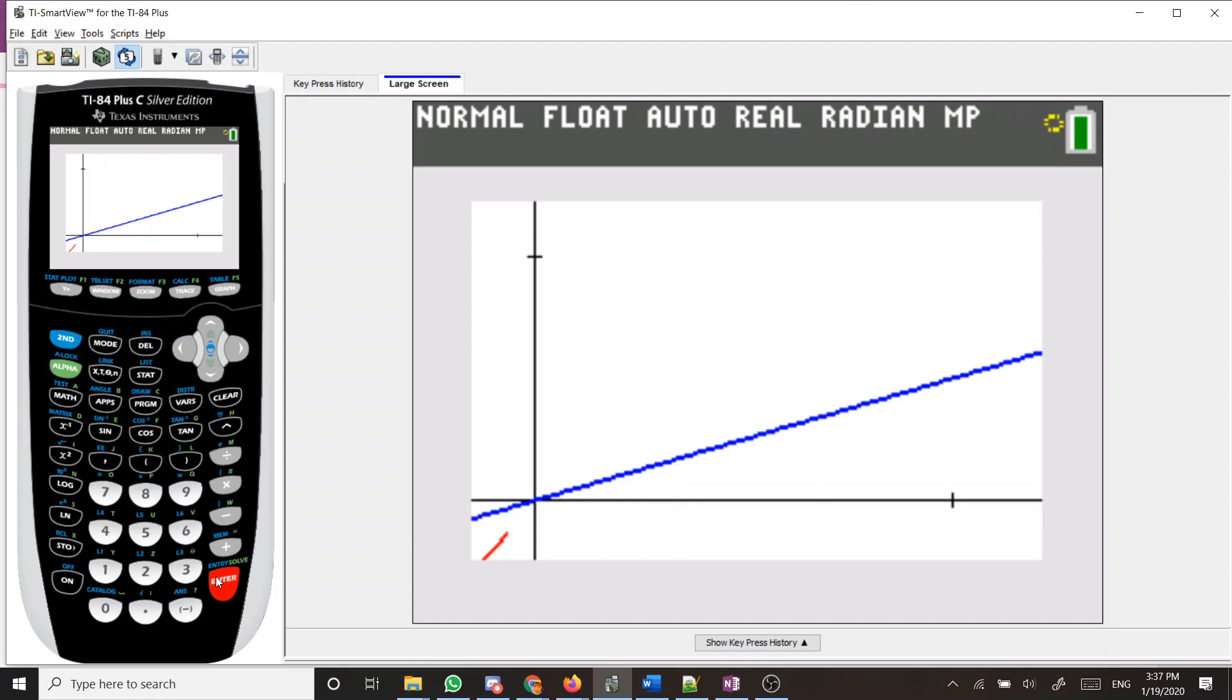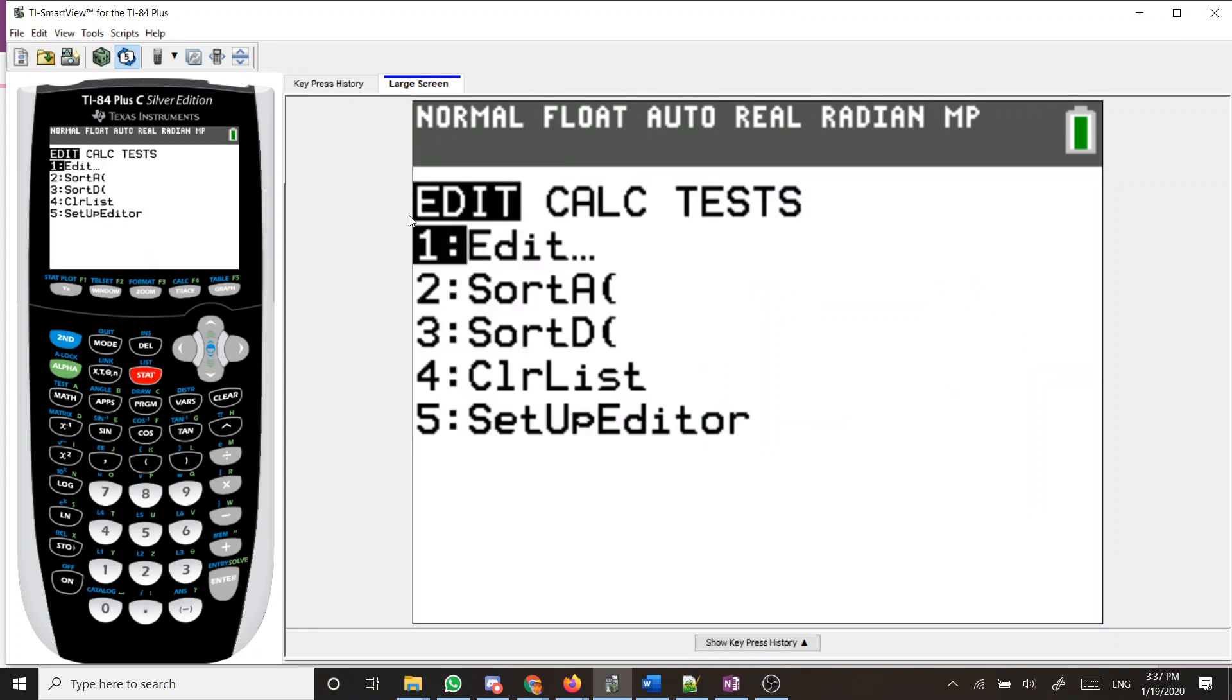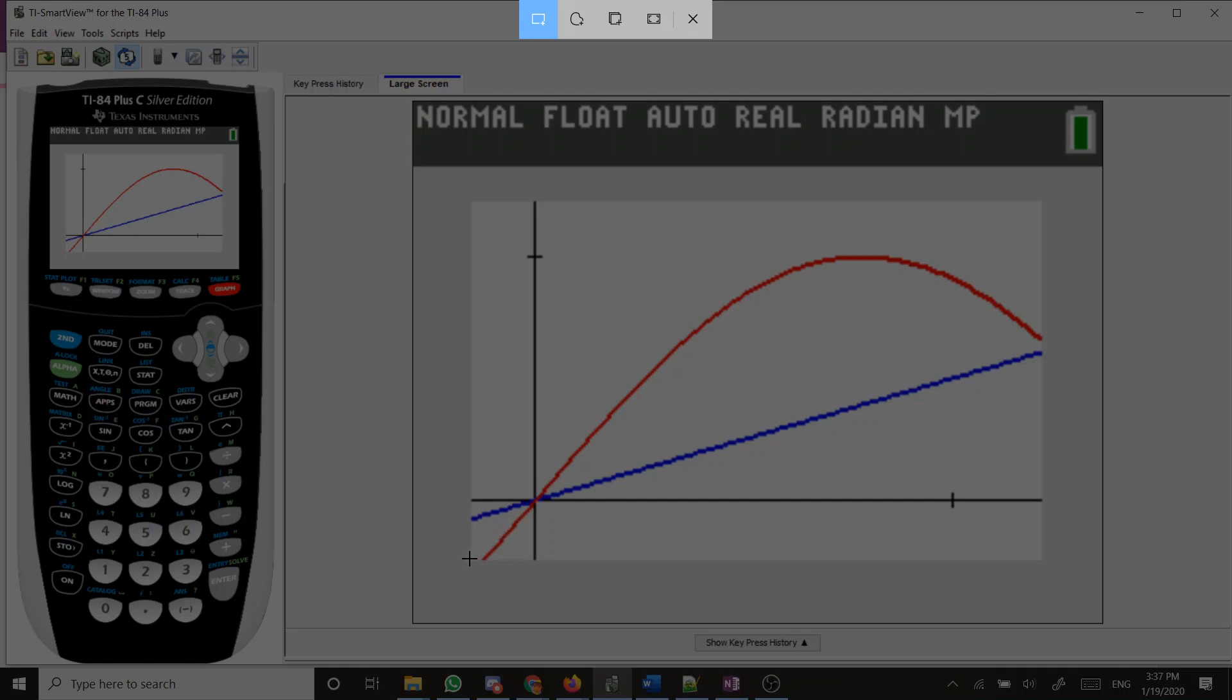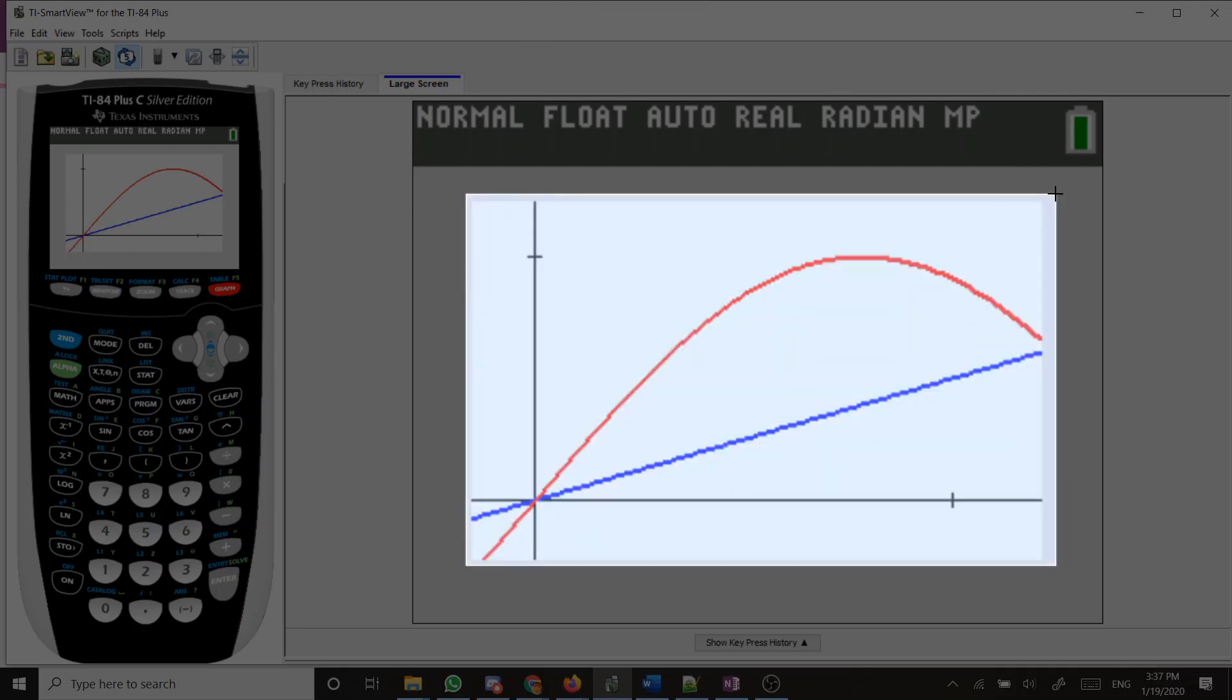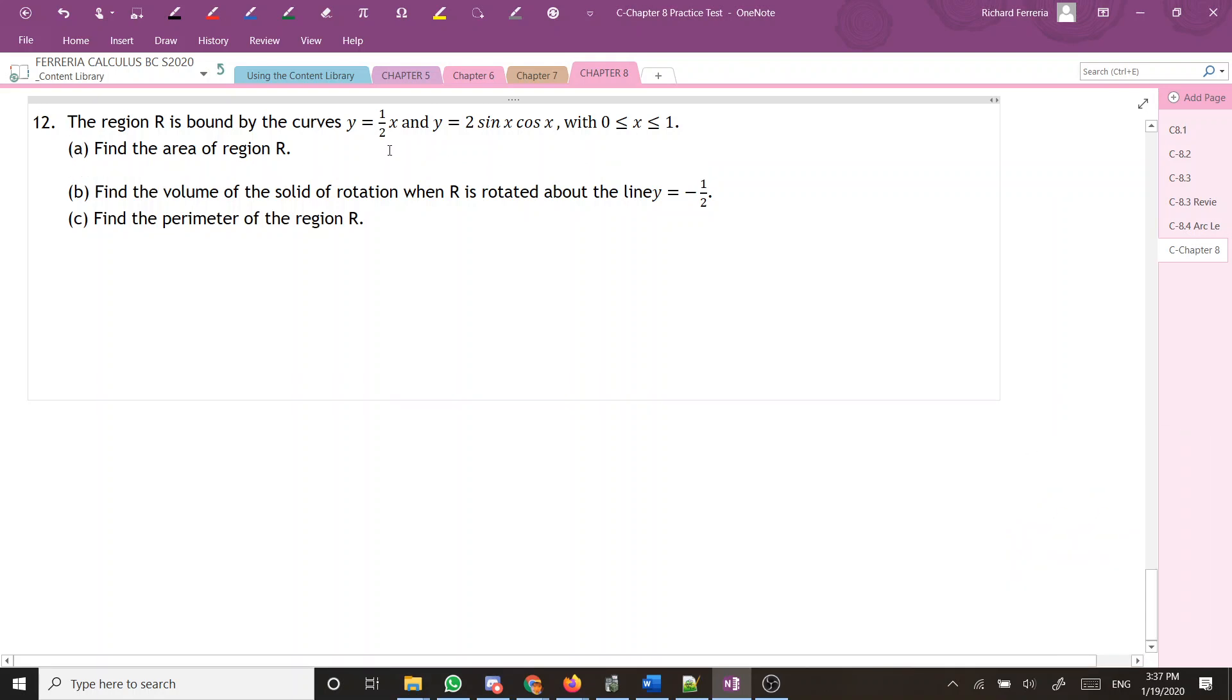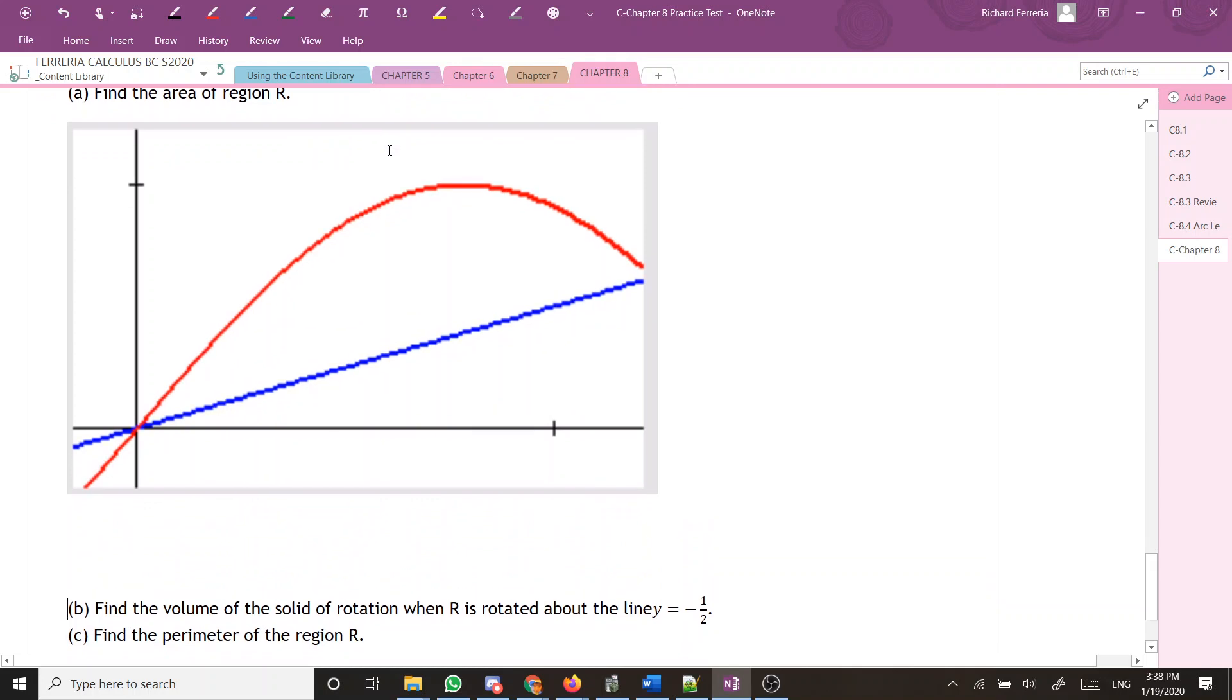Push enter and that should get it done. Y equals 1 half x, and then here is that sine x cosine x. Just as expected. Let's take a screenshot of this. I'm going to get this screen and put it onto my OneNote. Paste that on here.